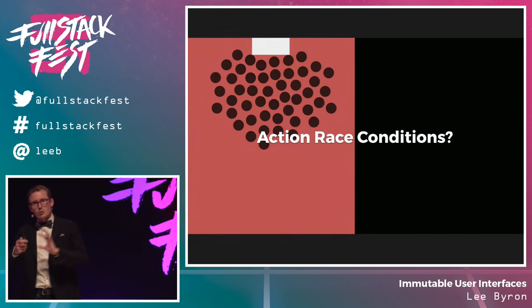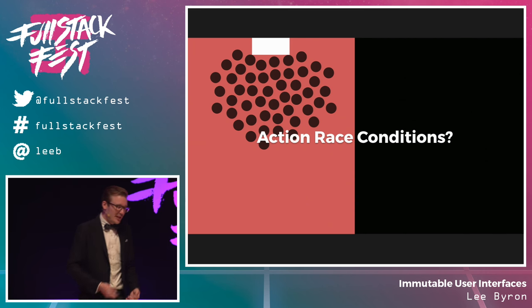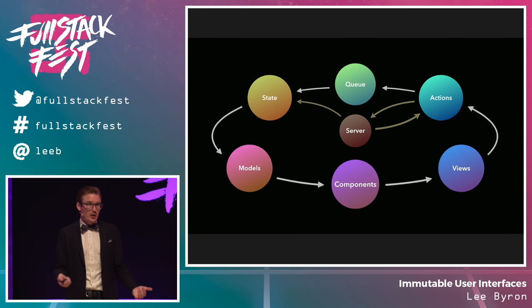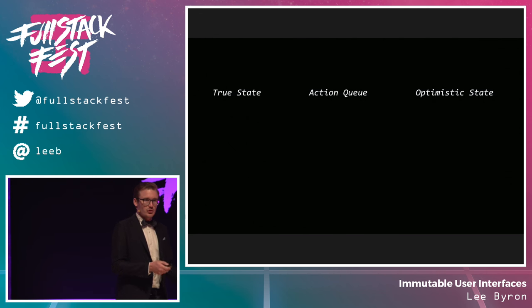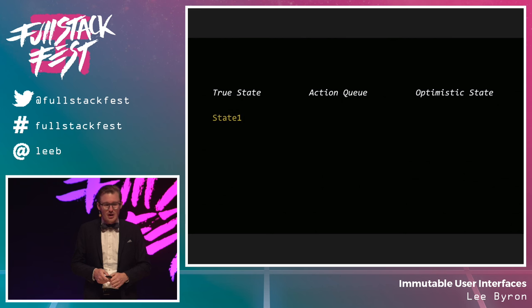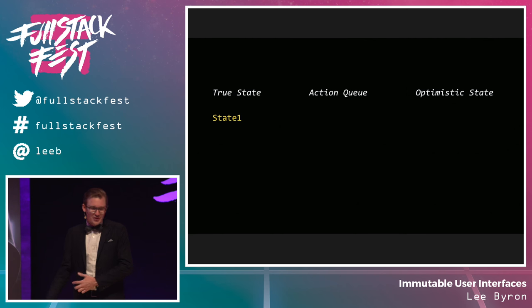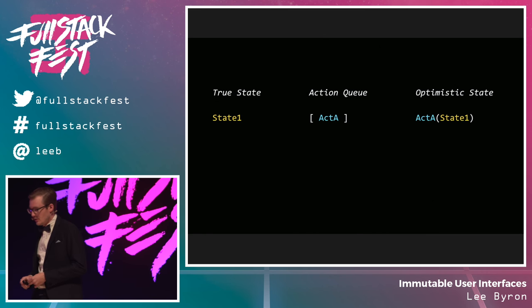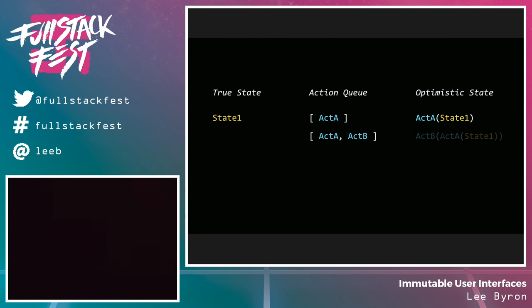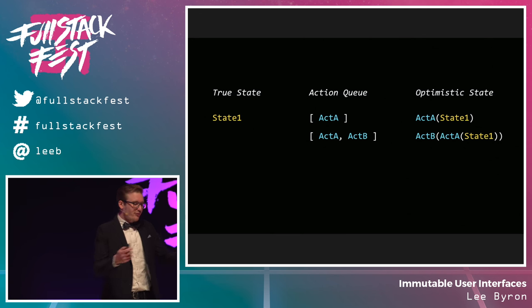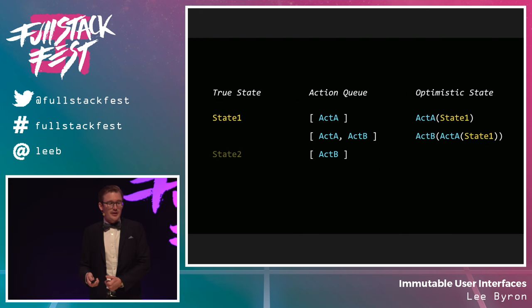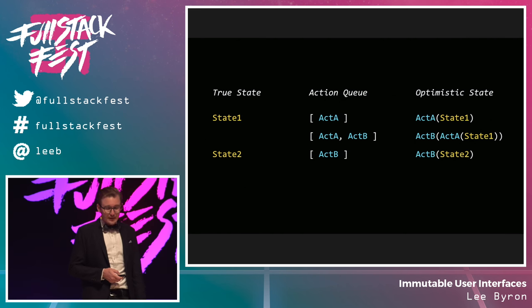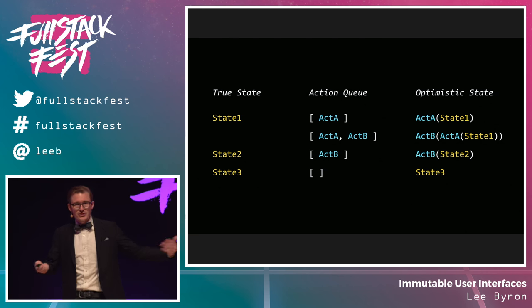That brings us to one last problem: what do we do when there are multiple actions happening at the same time? For this we need a queue to make sure things happen in the right order and we don't get race conditions. The queue keeps track of the most recent true state from the server and a list of actions currently in flight. A new action immediately computes our optimistic state and gets sent to the server. When the first action completes, we remove it from the queue, get a new true state, and recompute the optimistic state from any remaining queued actions.